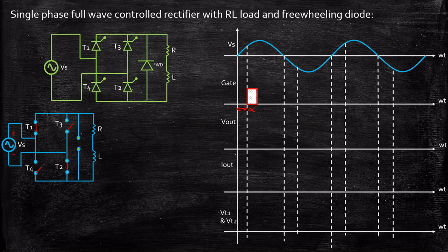The voltage across the freewheeling diode will be reverse biased because plus is appearing at the cathode and minus is appearing at the anode of the freewheeling diode. As a result the freewheeling diode also acts as open circuit. Now the current starts flowing through the load, the inductor starts charging with polarity plus and minus, and it flows back through T2 and returns to the source.